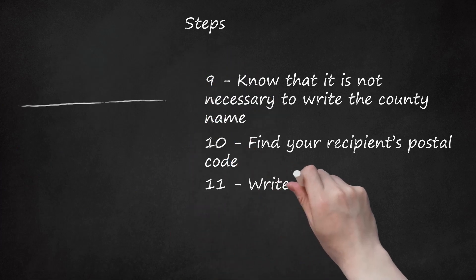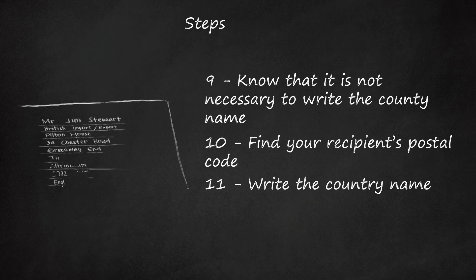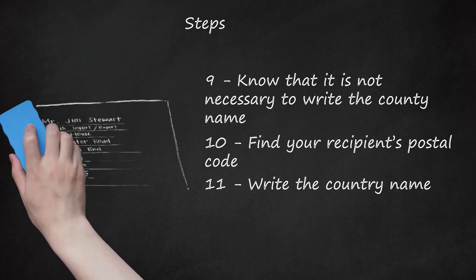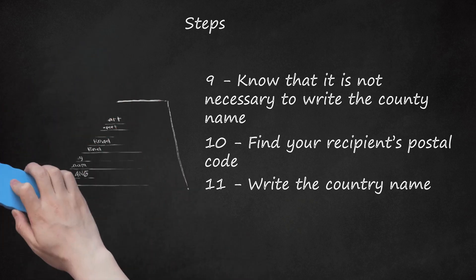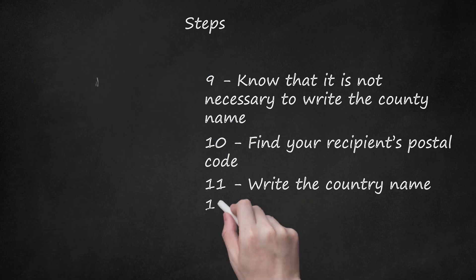Step 11. Write the country name. On the last line of the address, write the name of the country you are sending your letter to. In this case, it would be the United Kingdom or England. So, to finish our example, you would write: Mr. Jim Stewart, British Imports, Exports, Pilton House, 34 Chester Road, Greenway End, Timperley, Altringham, SO32 4NG, England.